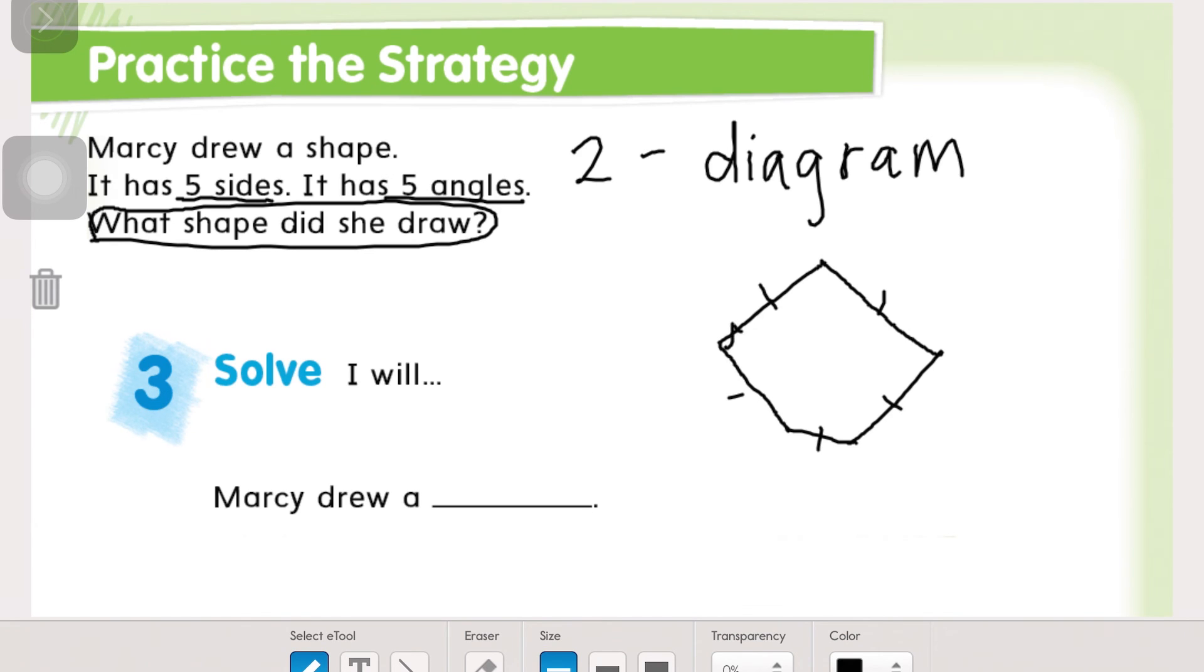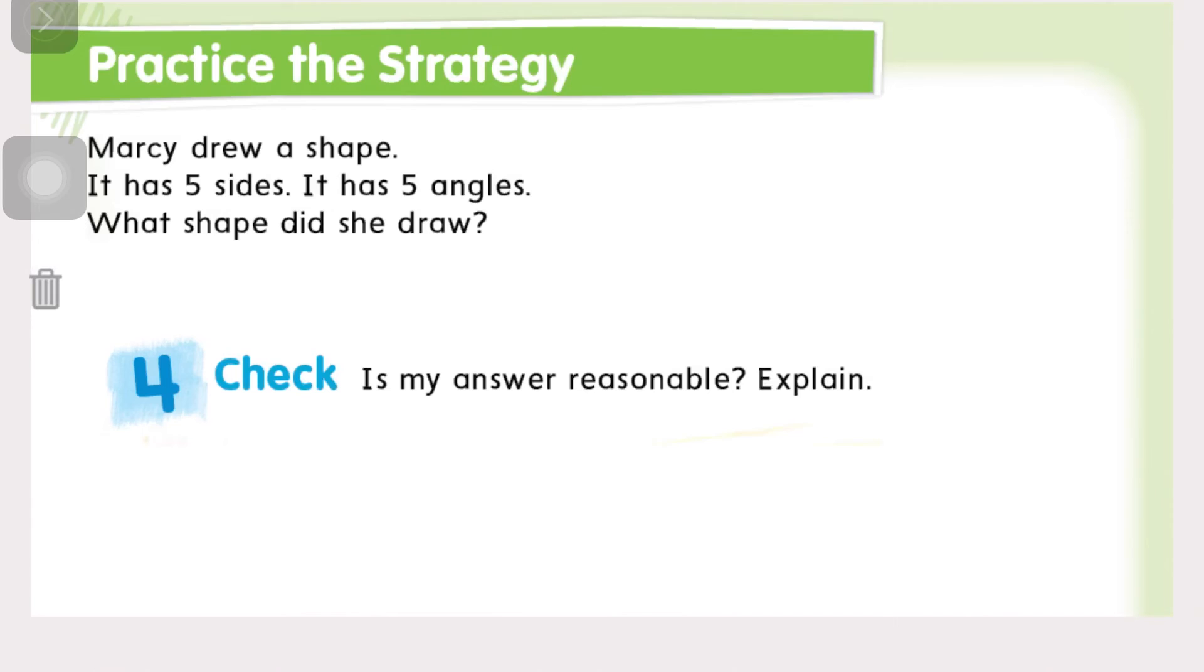And it also has five angles. One, two, three, four, five. So Marcy drew a pentagon. A five-sided figure is called a pentagon.